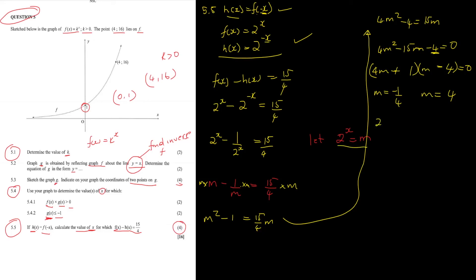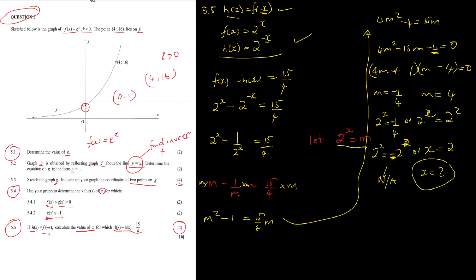Since m = 2^x, we have 2^x = −¼ or 2^x = 4. The solution 2^x = −¼ is not valid because an exponential is always greater than zero. For 2^x = 4 = 2², we get x = 2. You can substitute x = 2 back into f(x) − h(x) to verify it gives 15/4. Therefore x = 2, giving you four marks.